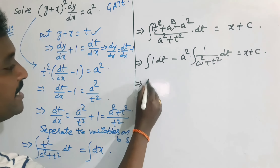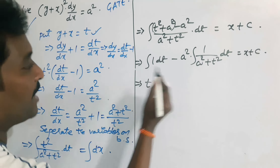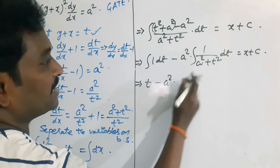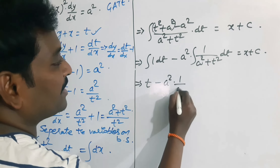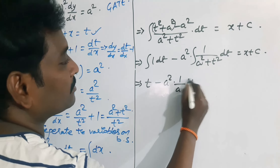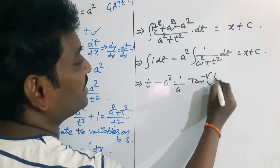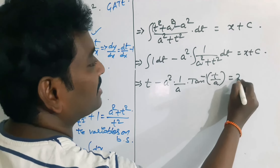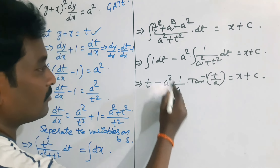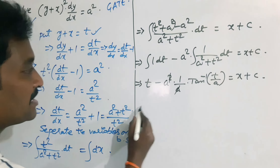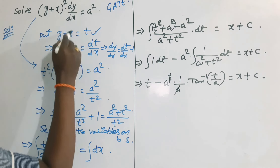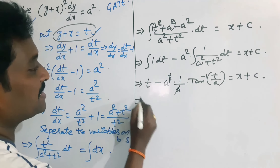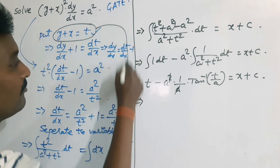So we get t − a² · (1/a) · tan⁻¹(t/a) = x + c, using the direct formula ∫1/(a² + t²) dt = (1/a) tan⁻¹(t/a). The 1/a simplifies, giving t − a · tan⁻¹(t/a) = x + c. Now replacing t with y + x.